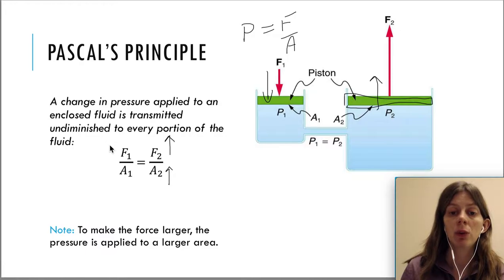Let's say F1 is 2, and let's say that A1 is 4. And now let's say that we want F2 to be bigger. Let's say we want F2 to be 6.